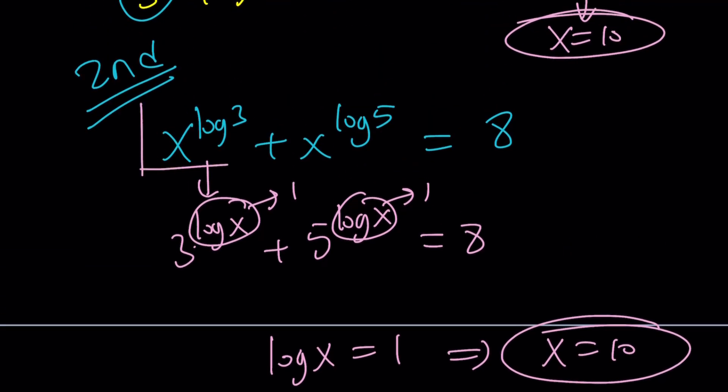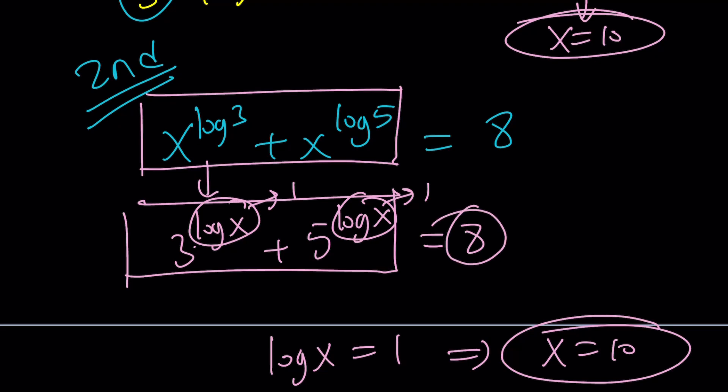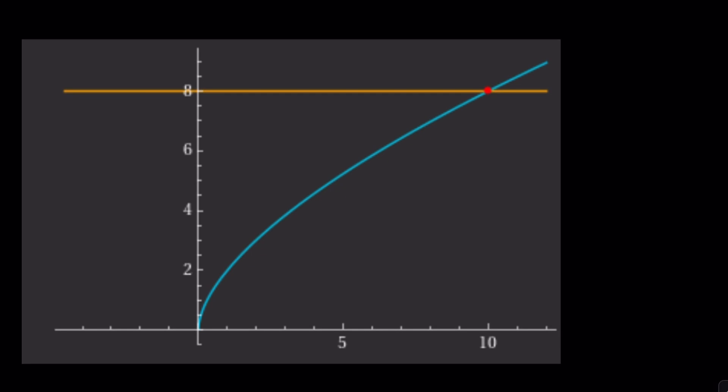Because this is an increasing function, and this is an increasing function because they have the same base, and that can only intersect the horizontal line at a single point. And this brings us to the end of this video.